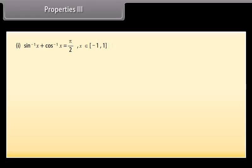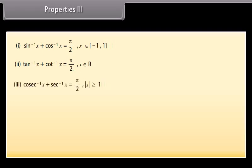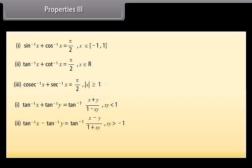Property 3: sin⁻¹ x + cos⁻¹ x = π/2, x ∈ [−1, 1]. tan⁻¹ x + cot⁻¹ x = π/2, x ∈ ℝ. cosec⁻¹ x + sec⁻¹ x = π/2, |x| ≥ 1. tan⁻¹ x + tan⁻¹ y = tan⁻¹((x + y)/(1 − xy)), xy < 1. tan⁻¹ x − tan⁻¹ y = tan⁻¹((x − y)/(1 + xy)), xy > −1.